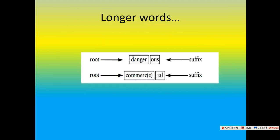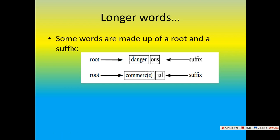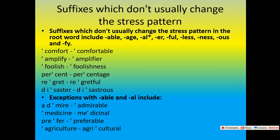Longer words consist of a root and a suffix. For example: 'dangerous' — 'danger' is the root and '-ous' is the suffix; 'commercial' — 'commerc' is the root and '-ial' is the suffix. Suffixes which don't usually change the stress pattern in the root word include: -able, -al, -er, -ful, -less, -ness, -ous, -fy.